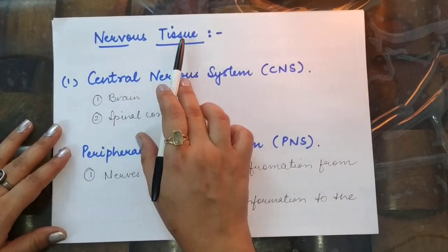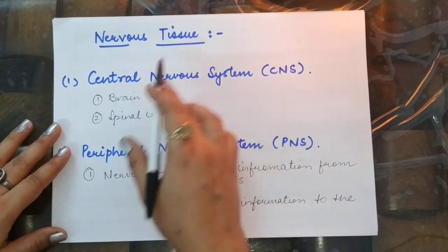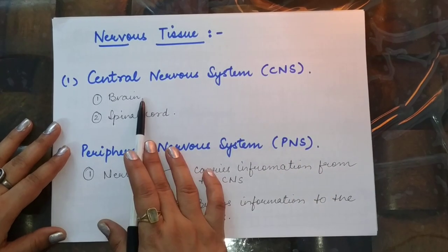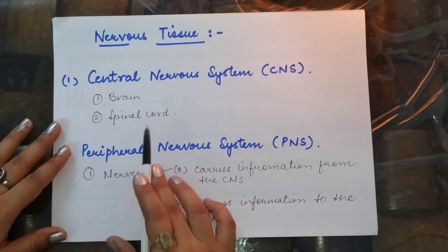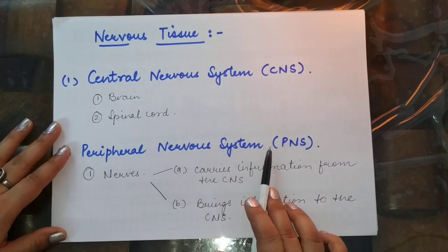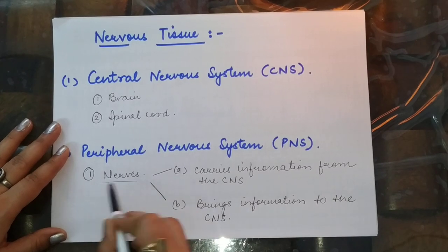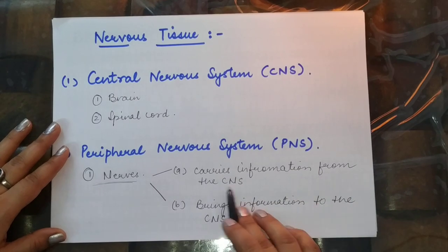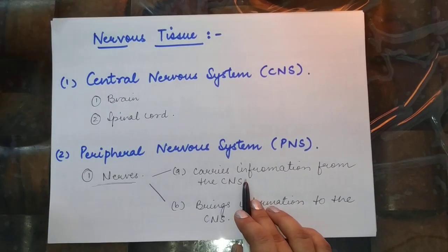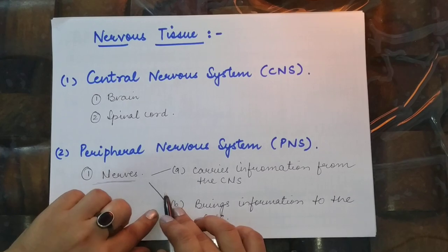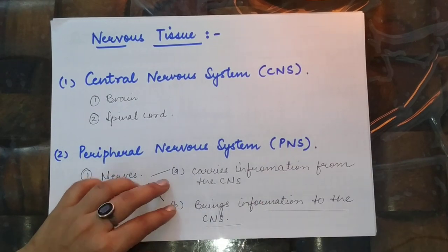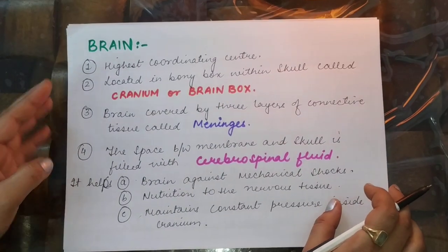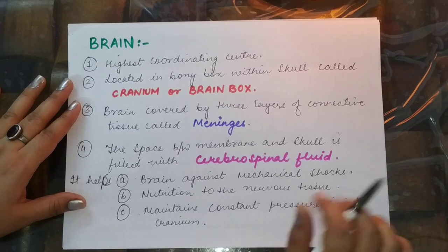The nervous tissue in human beings is divided into two main parts. The first is the Central Nervous System (CNS), which includes the brain and the spinal cord. The second is the Peripheral Nervous System (PNS), which is composed of nerves that carry information from the CNS and bring nervous information back to the CNS.